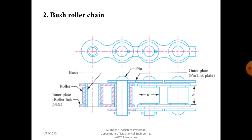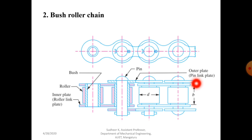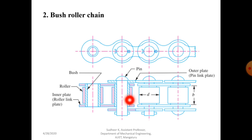The next important type is bush roller chain. It consists of outer plates (pin link plates) and inner plates (roller link plates), along with a pin and roller. A pin passes through a bush which is secured in the holes of the roller link between the two sides of the chain. The rollers are free to rotate on the bush, which protects the sprocket wheel teeth against wear. The pin, bush, and roller are usually made of alloy steel.